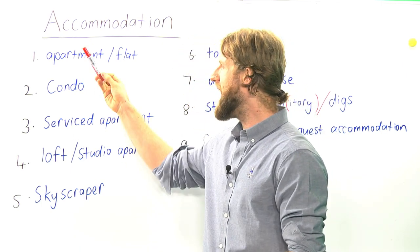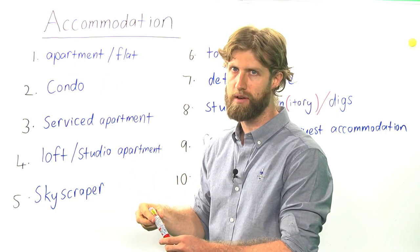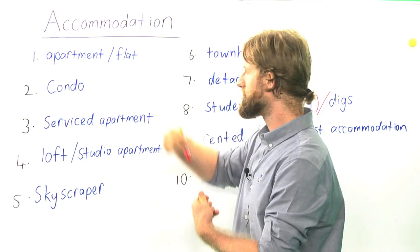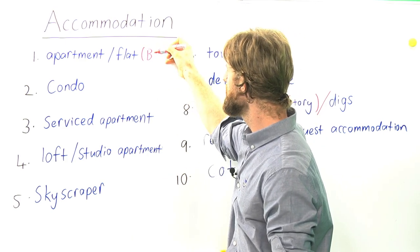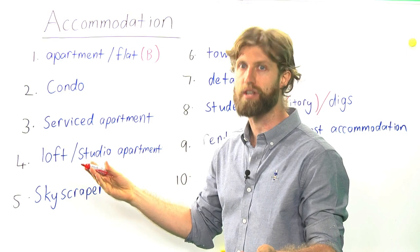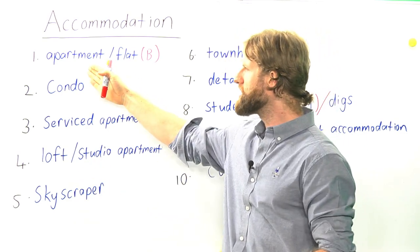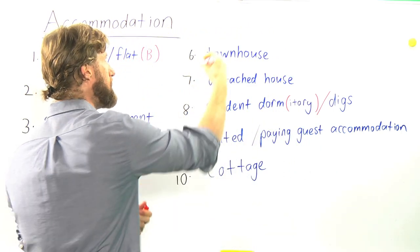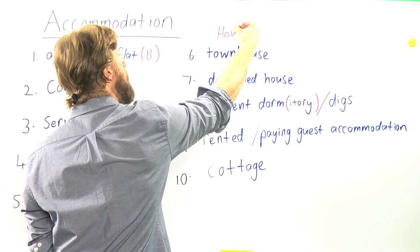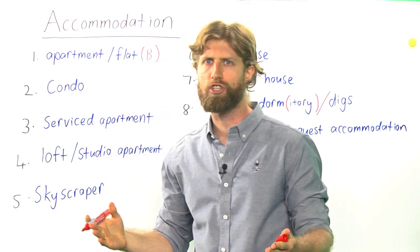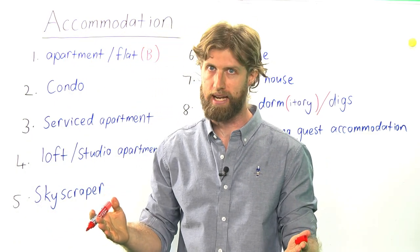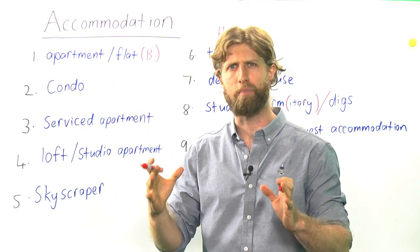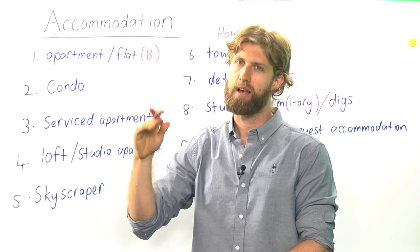First, we have an apartment, which is an American word, or a flat, which is the way British people would say that — so B for British English. An apartment or a flat is different from a house. Houses are usually their own separate building, while an apartment is a small room or building inside of a big building.